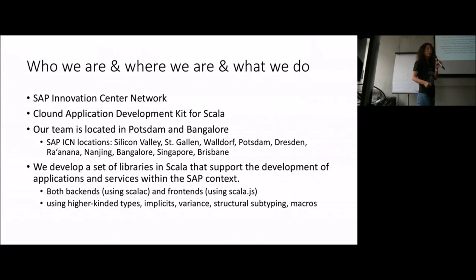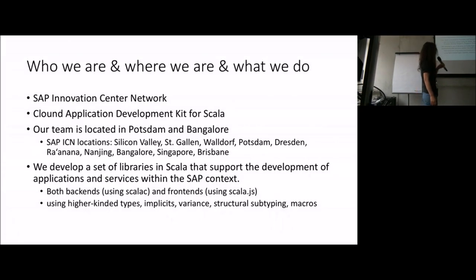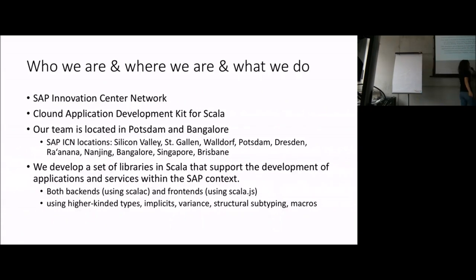This includes the backend connected to the SAP HANA database. We also built a front-end using Scala.js, which integrates with our SAP-specific UI components called Fiori or UI5. Our library uses many advanced features from Scala, including higher-kind types, implicit variance, structural types, and macros. But today my talk will be focused on variance and structural subtyping.